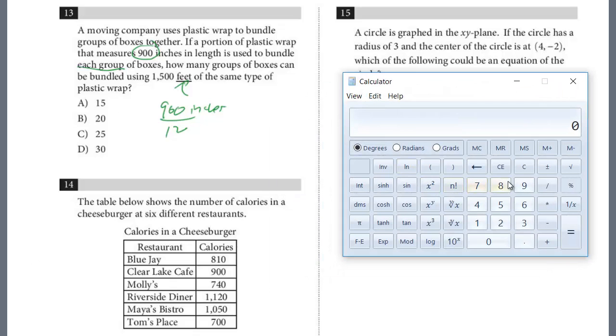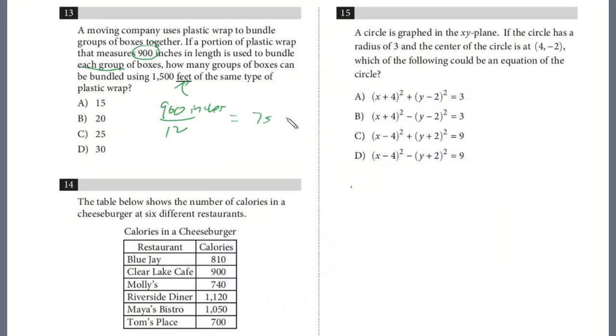And so we'll just use our calculator. So 900 divided by 12, and that is 75. So 75 feet to bundle each group.